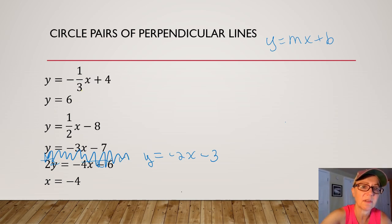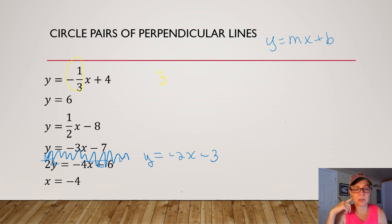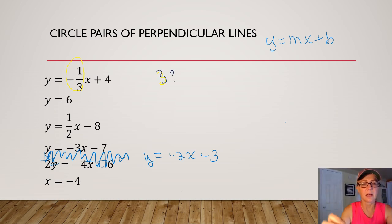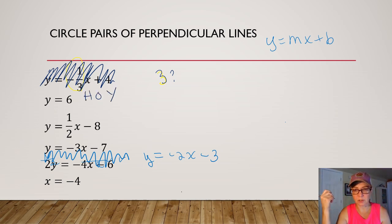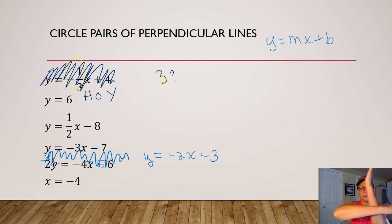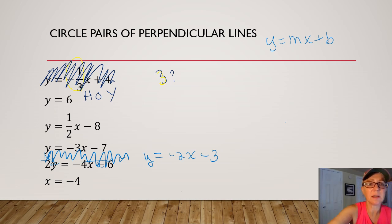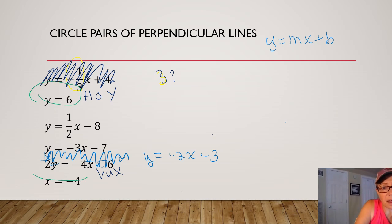We have a slope of negative one third. The negative reciprocal of negative one third is positive three. Looking for an equation with a slope of positive three — there's not one. So this equation does not have a perpendicular partner. The second equation is y equals six, a horizontal line. Think horizontal and think perpendicular — like your floor and your wall. We're looking for a vertical line, and the equation of a vertical line only has an x, and we do have one. So let's circle that pair in green — they are perpendicular.